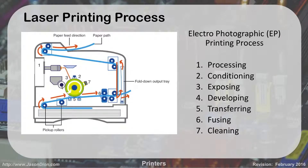There are seven steps in the electrophotographic process, which is the laser printing process. First, we send the data in. The laser bounces off a mirror onto the drum, positively charging certain sections — that's the processing and conditioning. Then we expose the laser onto the drum to give that positive charge. Next is developing, where the toner rolls onto the drum. The paper is then picked up by the separator pad and pickup rollers and rolled underneath the drum, where the toner is transferred onto the page. The page goes through the fuser in step six, where it melts the toner onto the paper. Finally, the paper is cleaned and sent out, and any excess toner is cleaned off the drum and recycled or discarded.